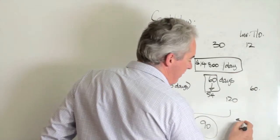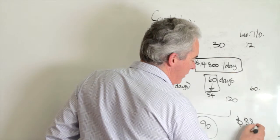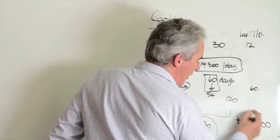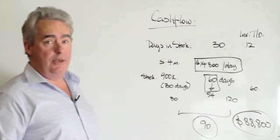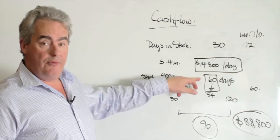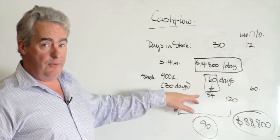That was a net result to them, positive cash flow of $88,800 by just getting their inventory from 60 days to 54 days.